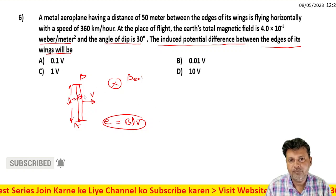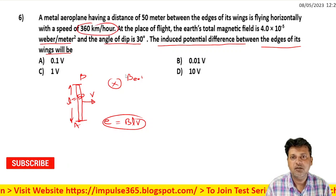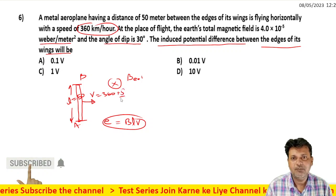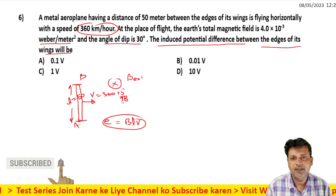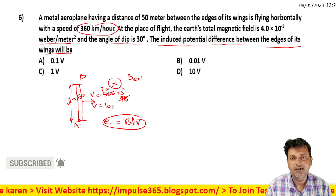Converting the velocity: 360 km/hr × 5/18 = 100 meters per second. The angle of dip is 30 degrees.